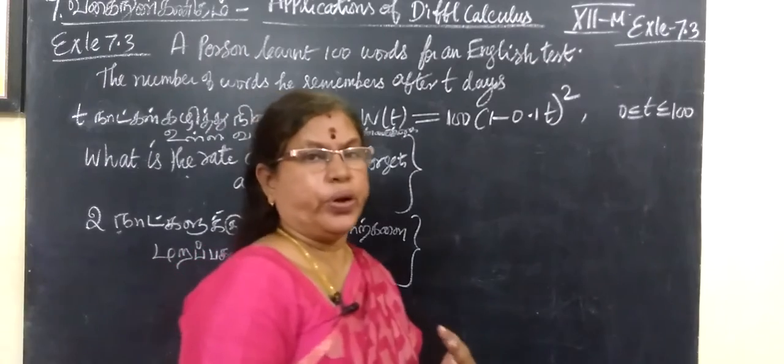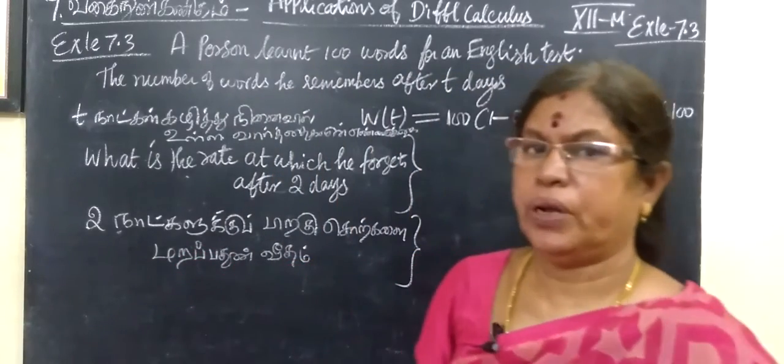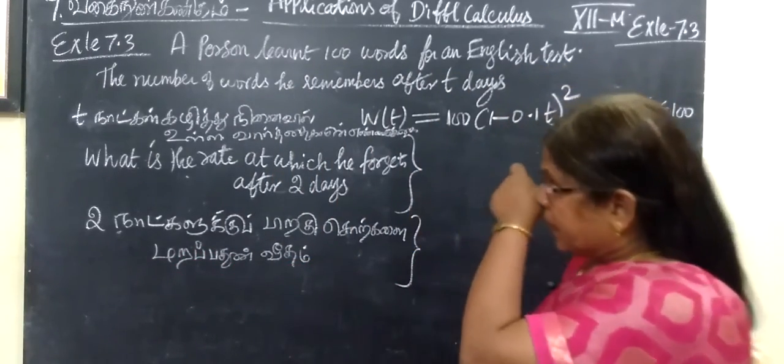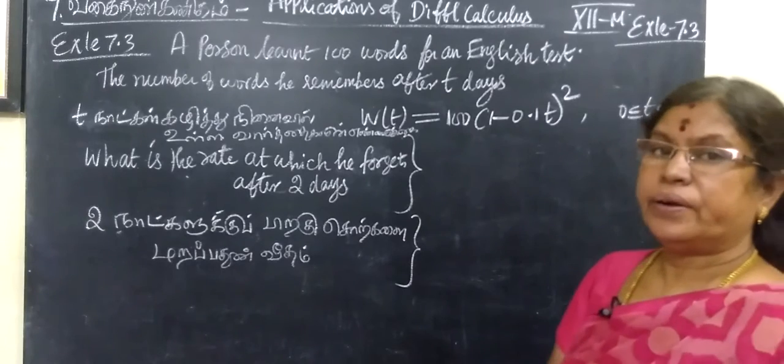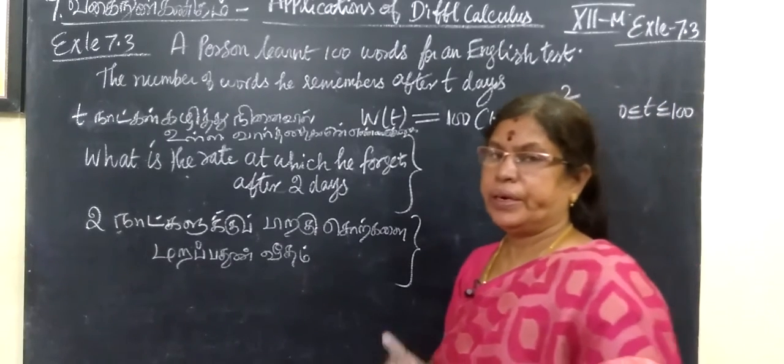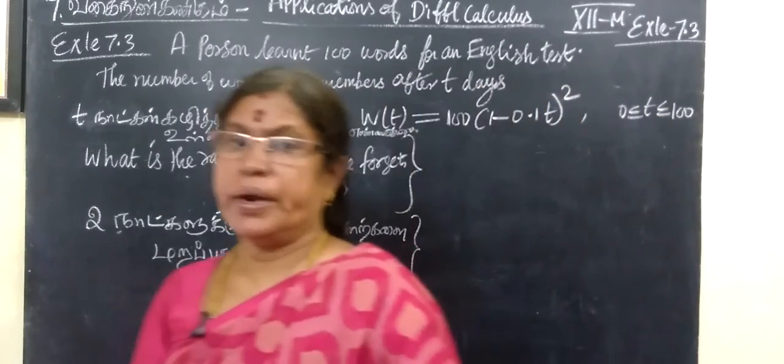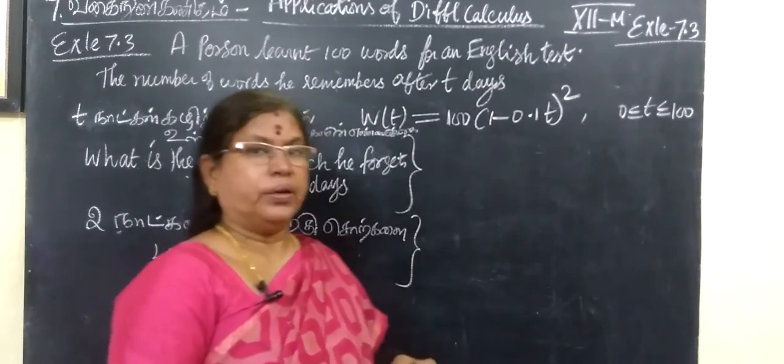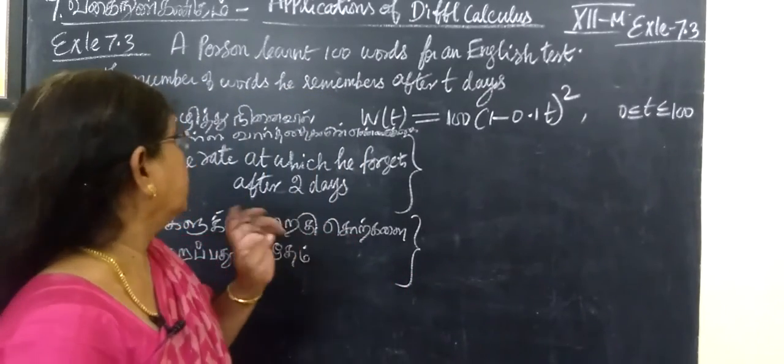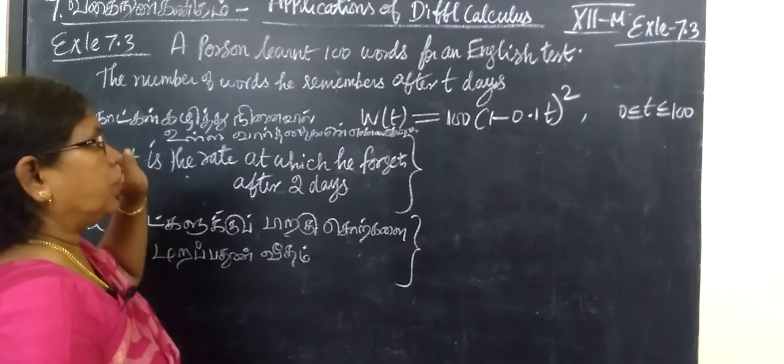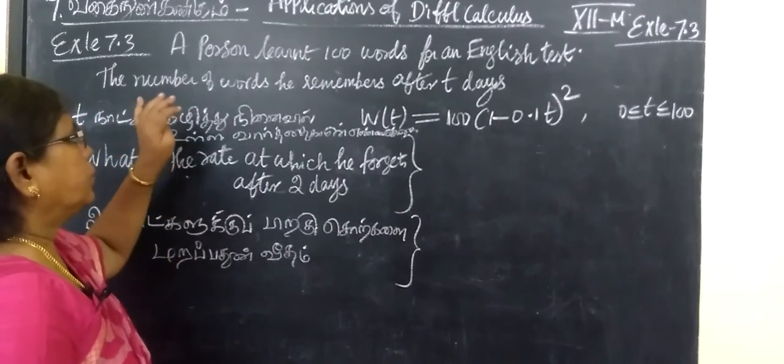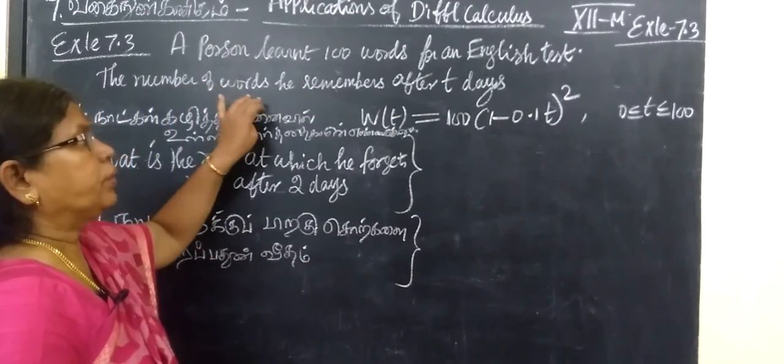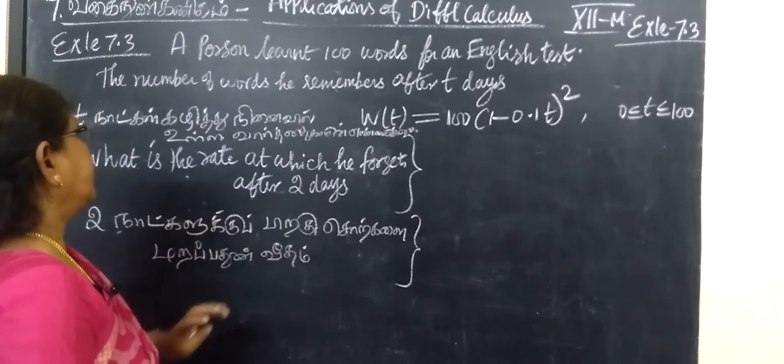Example 7.3. A person learnt 100 words for an English test. The number of words he remembers after three days.